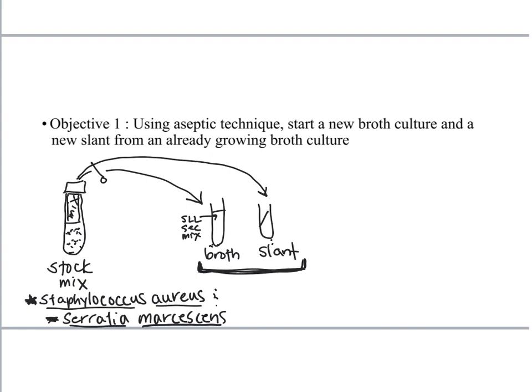Serratia marcescens is more of an environmental soil organism. We like to use it here because the colonies, when they grow up, have a nice pinkish-red pigmentation. So the Staph aureus is kind of a creamy, almost yellowish color. And the Serratia is red, so they have a nice contrast. You can tell the difference between them pretty easily.